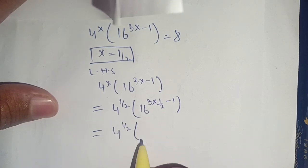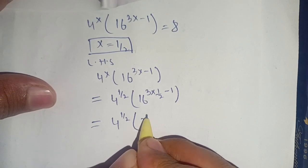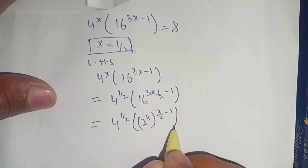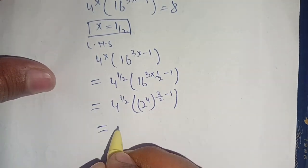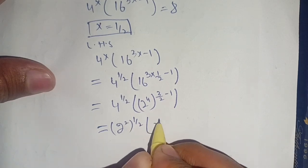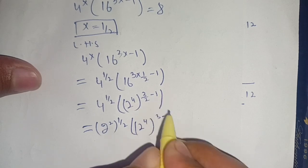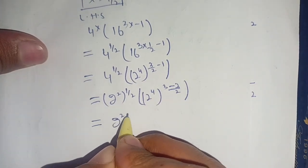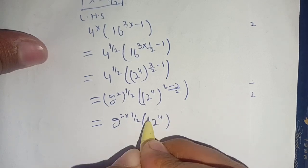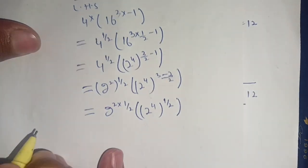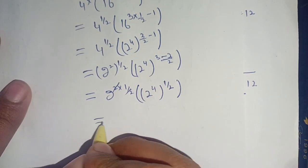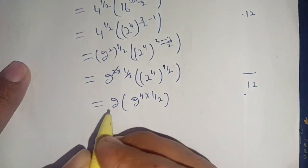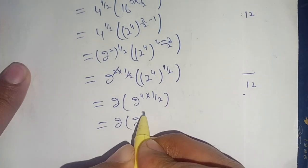This becomes 4^(1/2) times (2^4)^(3/2 - 1). We write 4 as 2^2, so we get (2^2)^(1/2) times (2^4)^((3 - 2)/2), which equals 2^(2·1/2) times 2^(4·1/2) = 2^1 times 2^2.